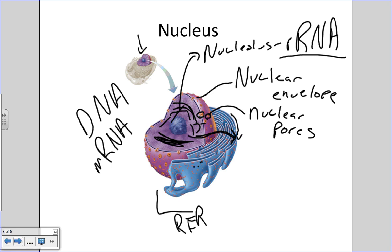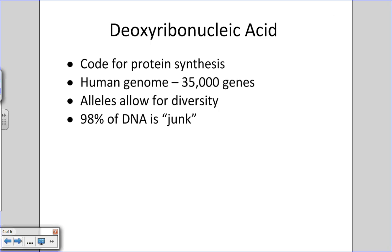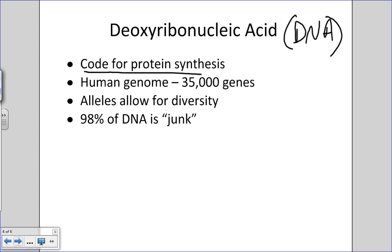By having the rough endoplasmic reticulum as an outgrowth of the nuclear envelope, a lot of messenger RNA does not have to travel far before we can produce a protein. That's the basic structure of the nucleus. Now let's talk about DNA — deoxyribonucleic acid. DNA has really one major function: it's a code for protein synthesis.